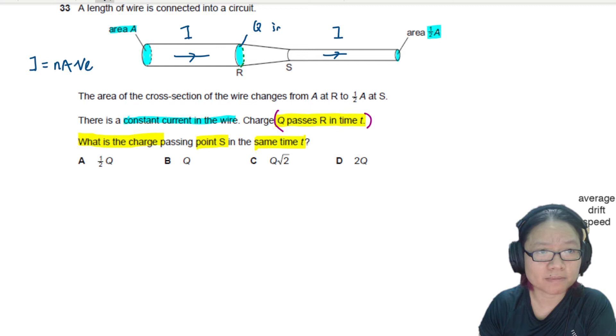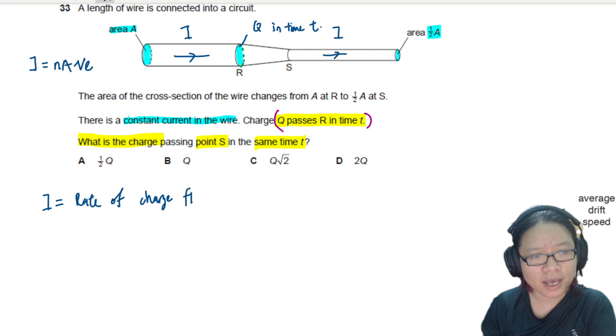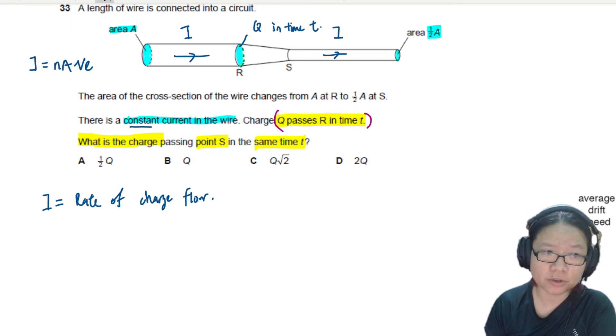in time t, is there a definition for current? Current is defined as rate of charge flow. And if we are just having a constant rate because the current is constant, then this one instead of dQ/dt we can write this one as Q over t.